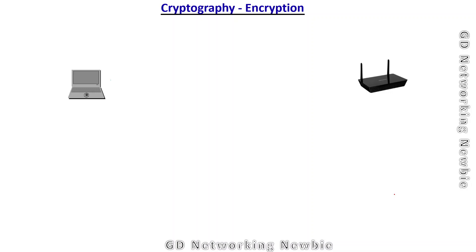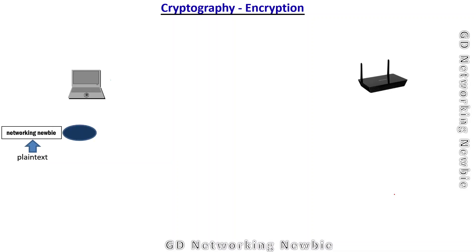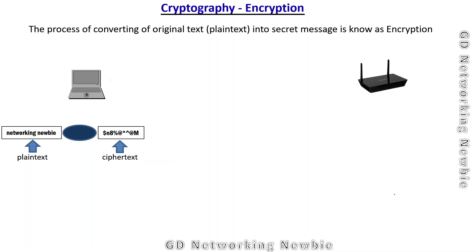Instead of transmitting our original message — which we specifically call plain text — we process it and convert it into a code. We give this a specific name: we call it ciphertext. This ciphertext is then transmitted to the destination. The process of converting the original plain text into a secret message is known as encryption — so the process of going from plain text to ciphertext is called encryption.